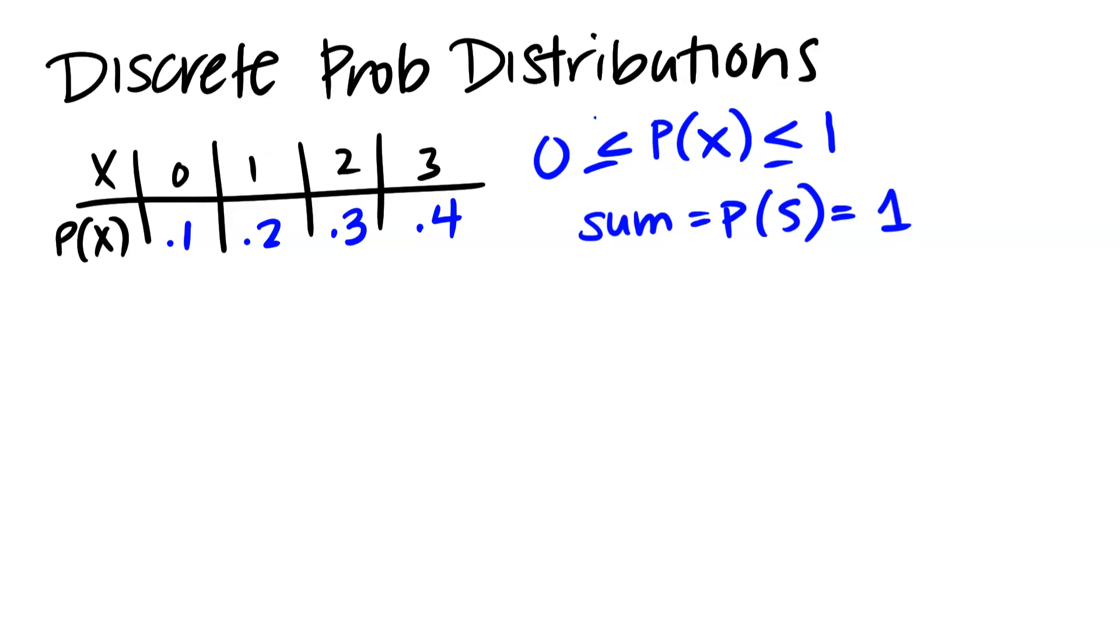So that's what we're looking for when we're looking for a valid probability distribution for a discrete random variable. Things I can ask you about for these probability things: One, is it valid, which is just checking those two options. Another is a probability for any particular outcome here, so X is less than or equal to 2. And just recognizing that in that case, less than or equal to 2 would be everything here.